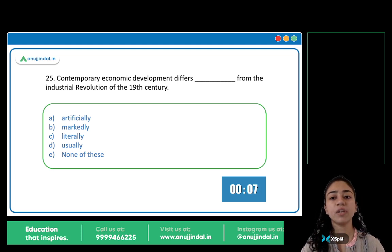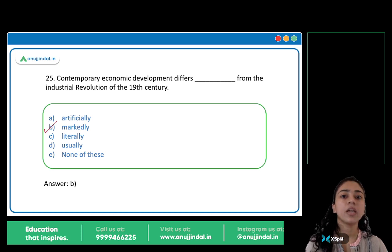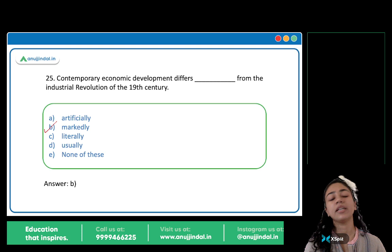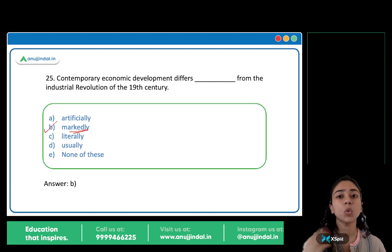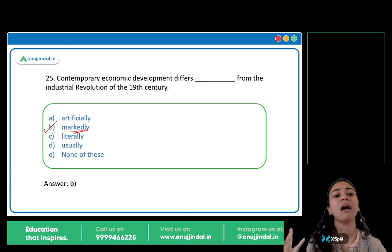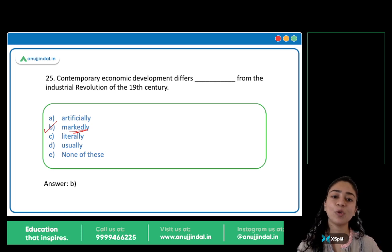Contemporary economic development differs blank from the industrial revolution of the 19th century. The answer is B: Markedly. It differs markedly from the industrial revolution — markedly means significantly, noticeably, considerably. I hope this is clear. This is it for today's session, I hope you all enjoyed it. Thank you for watching, I'll see you all in the next session.